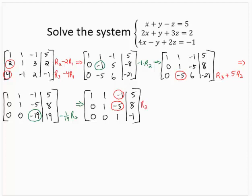So I'm going to take row 2 and add 5 row 3s, and that will give me a 0 in the last element in row 2. I'm going to take row 1 and add row 3, and that will give me a 0 in the last element in row 1.